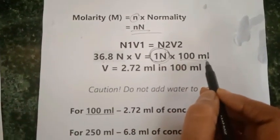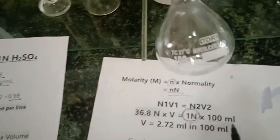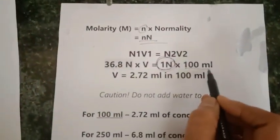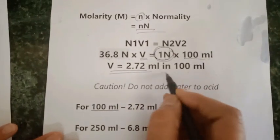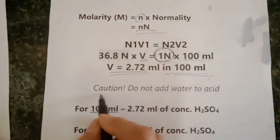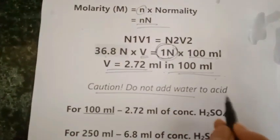Using this normality equation, I get the volume of concentrated H2SO4 as 2.72 ml to add into 100 ml. The key point is we are not going to add water to the acid, we do the reverse—we add the acid to the water.